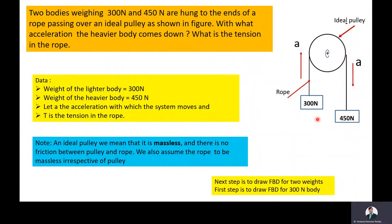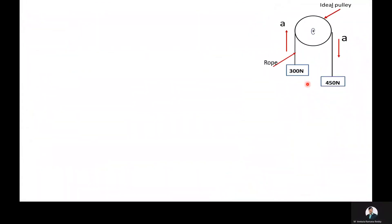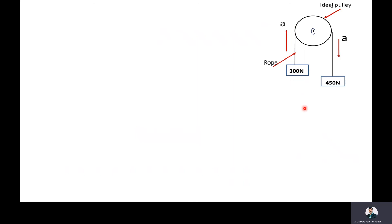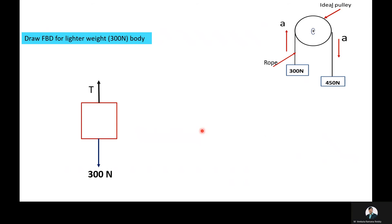Next step is drawing the free body diagram for the two weights. First, we will draw the free body diagram for the 300N weight body. The 300N body is connected to the rope, so the tension in the rope acts away from the 300N body — that is, tension acts vertically upward. The weight of the body acts vertically downward. Since the 300N body is moving vertically upward, the inertia force acts vertically downward.